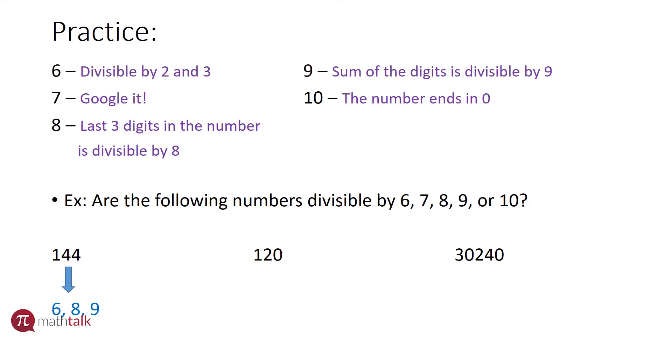All right, let's do 120. For 120, if I try two, the last digit of 120 is a zero, two, four, six, or eight, so it's divisible by two. If I add up the digits, one plus two plus zero, I get three, which is divisible by three, which means two and three both work, which also means that six works.